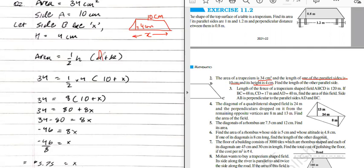Anyway, area of trapezium. Write properly. Area equals half into height into sum of parallel sides, a plus b. Formula derivation we have done in the last class.